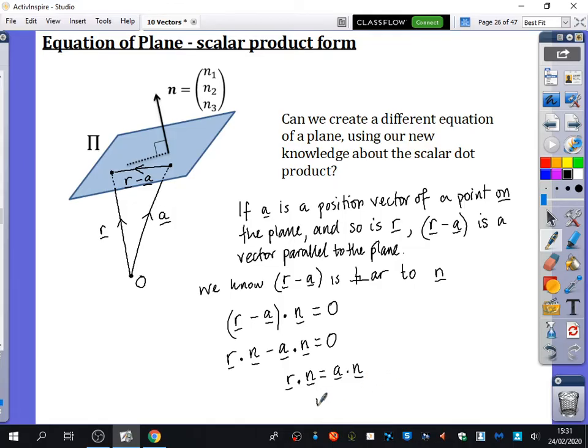Usually, though, we write this as R dot N equals P. Have you noticed what I've done to P that I haven't done to the other ones? I haven't underlined it. Why have I not underlined P? It's not a vector. It's a scalar. When you do A dot N, A is just three numbers. N is just three numbers. When you dot product those three numbers and three numbers, you just get a new number, a constant.